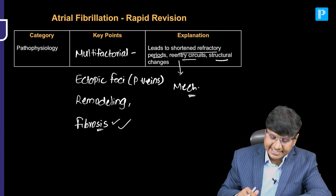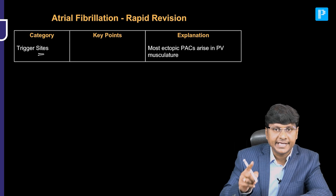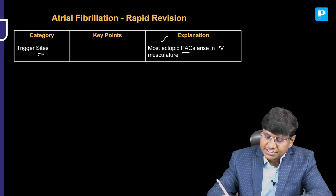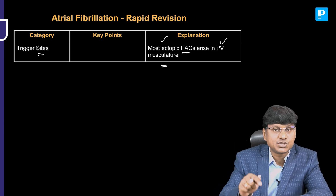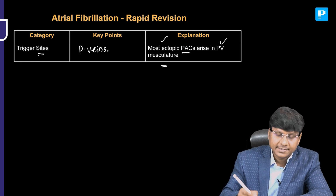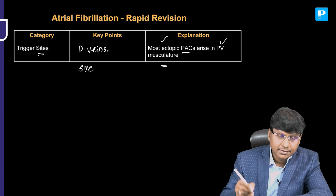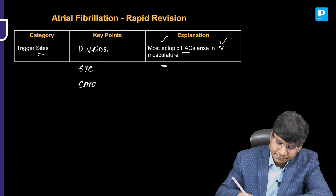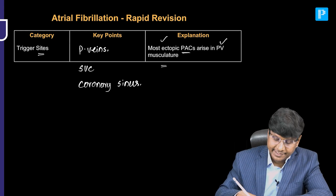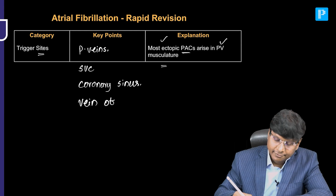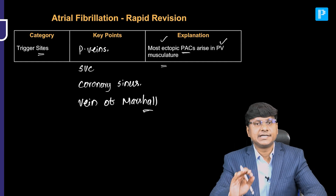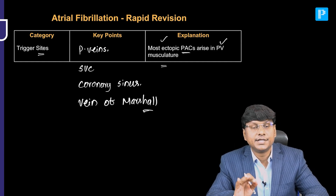The triggering sites for AF include most ectopic premature atrial contractions which arise in the pulmonary vein musculature. The triggering sites are the pulmonary vein, superior vena cava, the coronary sinus, and the vein of Marshall. These are the trigger sites for atrial fibrillation.